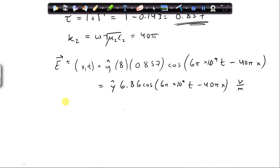To find the transmitted magnetic field in part F, we're going to need eta 2 for material 2, which we already calculated for the reflection coefficient. This is 188.5 ohms.